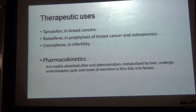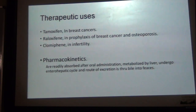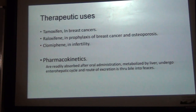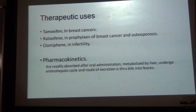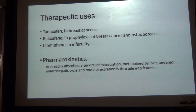Therapeutic uses: Tamoxifen is used in breast cancers as palliative treatment — it relieves symptoms but does not cure the disease. Raloxifene is used in prophylaxis of breast cancer and osteoporosis. Clomiphene is used successfully to treat infertility, especially those associated with anovulatory cycles. However, it is ineffective in women who have ovulatory dysfunction due to pituitary or ovarian failure. SERMs are readily absorbed after oral administration, metabolized by liver, undergo enterohepatic circulation, and excreted through bile into feces.